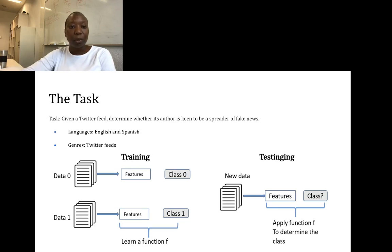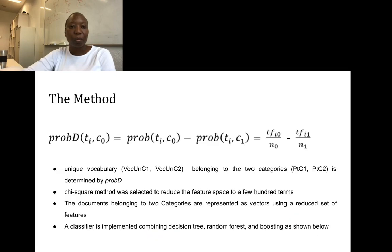First, we have to build a model for handling this task. We start by obtaining distinguishing features from the two categories. The distinguishing features together with their classes will be used to learn a discriminating function. This function can then be applied on new data to determine the probable class that this data belongs to.